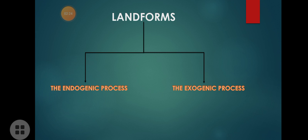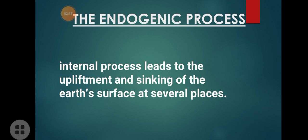Last class we studied about volcanic actions — volcanoes and earthquakes — they are all part of the endogenic process, that is processes happening below the earth's surface. Because of changes happening below the earth's surface, we have changes in the outer surface of the earth also. This type of process is called endogenic process — internal processes that lead to the upliftment and sinking of the earth's surface at several places.